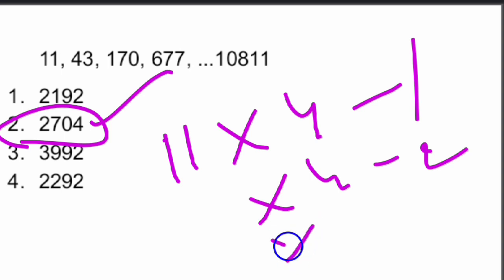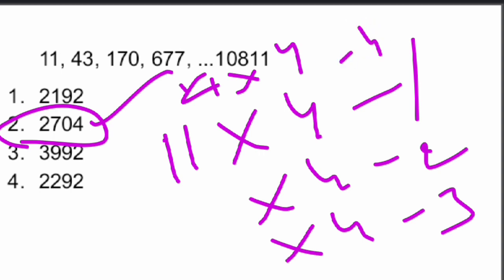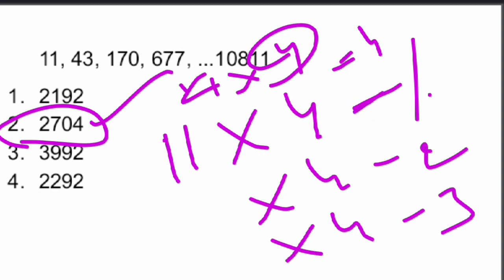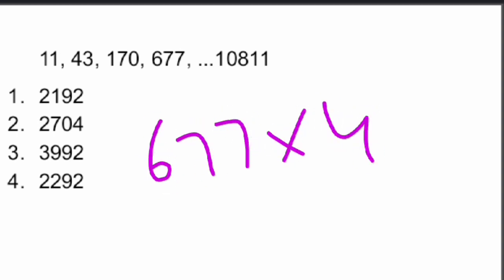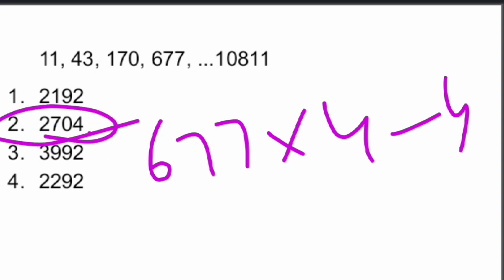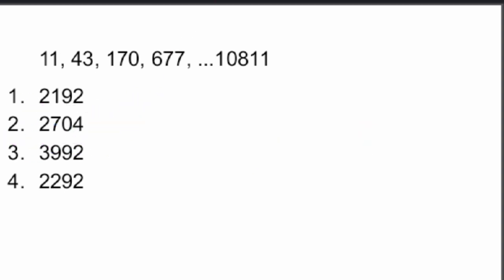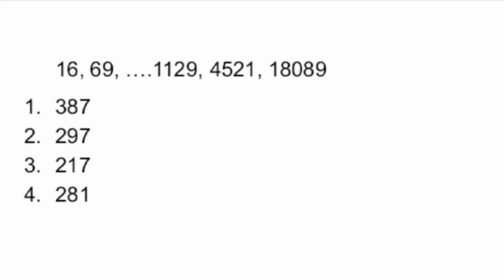So the fifth number is 677 × 4 − 4 = 2708 − 4 = 2704. Our answer is 2704, which is option 2. The series follows: first number × 4 − 1, second number × 4 − 2, third number × 4 − 3, fourth number × 4 − 4, and so on. These are questions related to number system from leading exam papers.